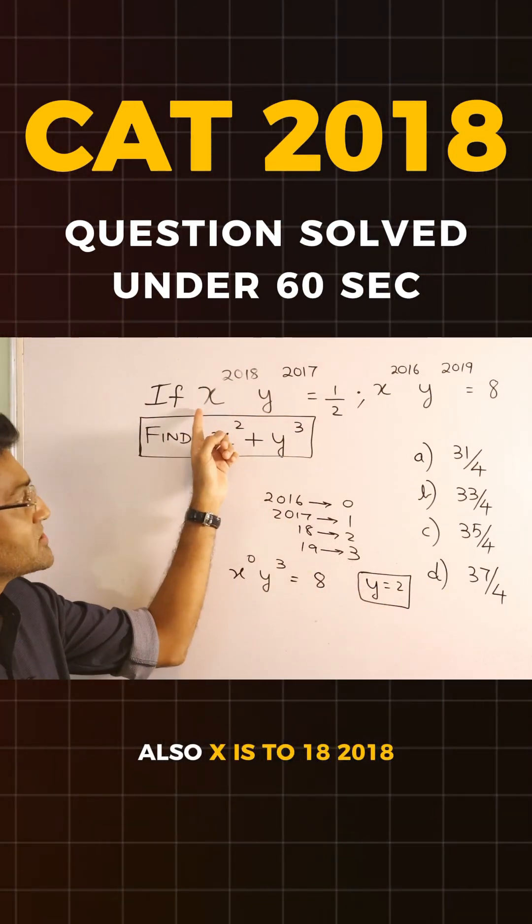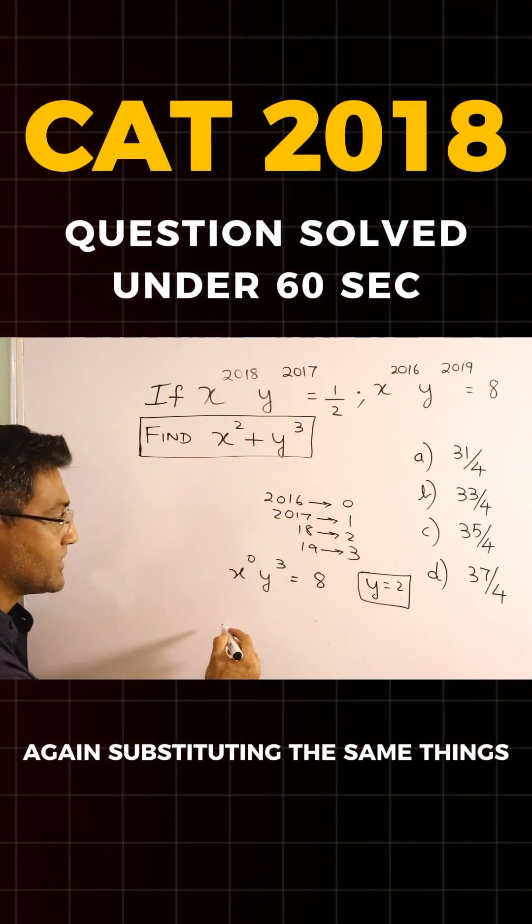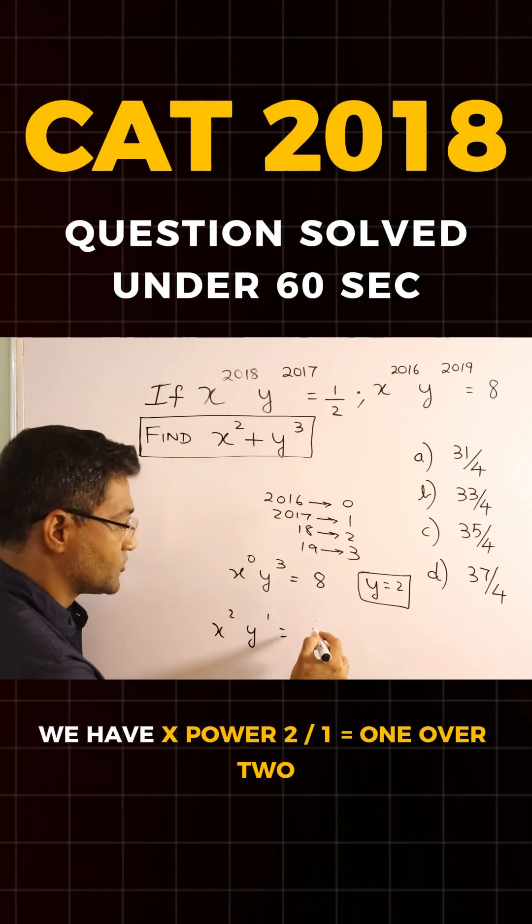Also, x raised to 18, 2018, and y raised to 2017 is half. Again, substituting the same things we have, x power 2, y power 1 equals 1 over 2.